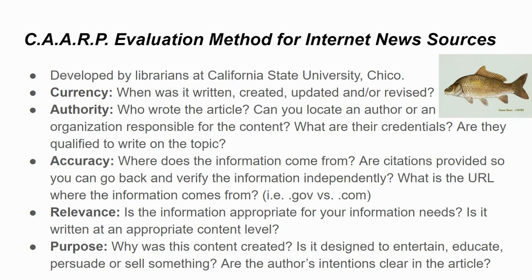Authority: when evaluating news sources on the internet, look at who wrote the article. Can you locate an author or organization responsible for the content? What are their credentials, and are they qualified to write on the topic? For example, if you were doing a paper on breast cancer, you wouldn't want to use an article written by a person not in the medical community. Make sure you're looking at your author's credentials.